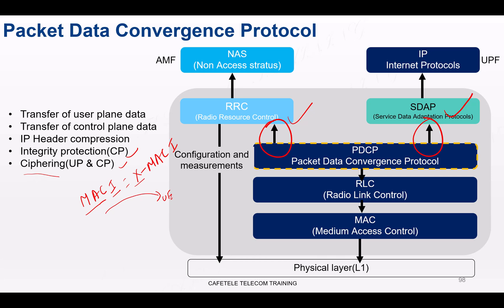PDCP also handles duplicate elimination. Because the RLC layer has a retransmission mechanism, duplicate packets may be received at the PDCP layer. PDCP is responsible for eliminating these duplicate packets to ensure that the upper layer receives each packet only once.